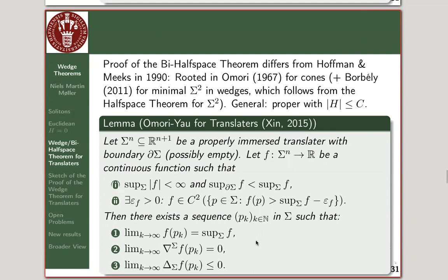What the principle says is that if you have such a function, then you have a sequence — in the interesting non-compact case, one running off to infinity on the surface. In the limit, you get the supremum value of your function f; the gradient in the limit tends to zero; and you have a sign on the Laplacian, just as you would at an interior maximum point. This guarantees that even in a non-compact situation, if you are a properly immersed translator or more generally have bounded mean curvature, you have such a theorem. We cite Ching because it's written out explicitly in his 2015 paper.